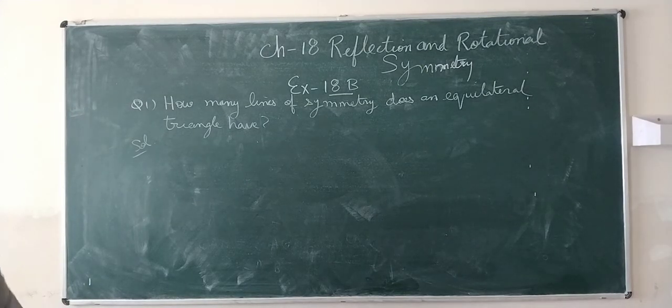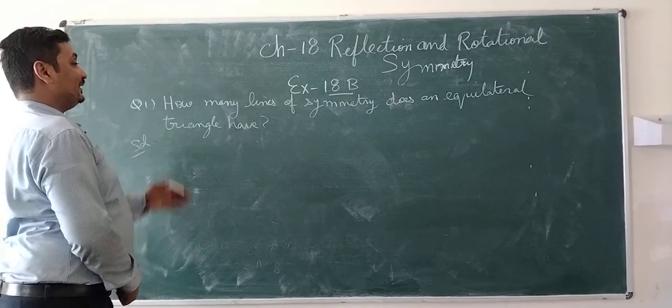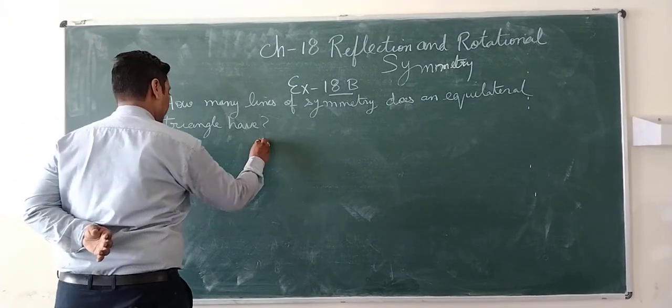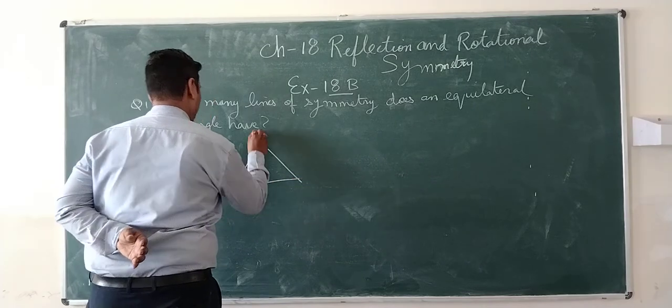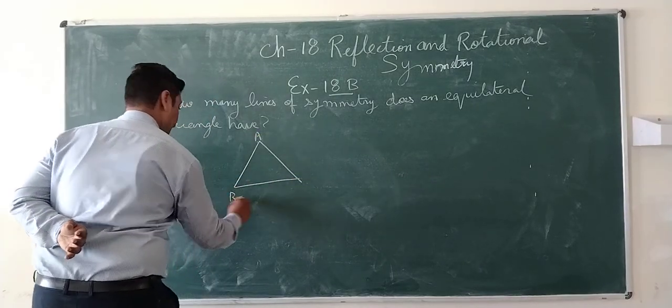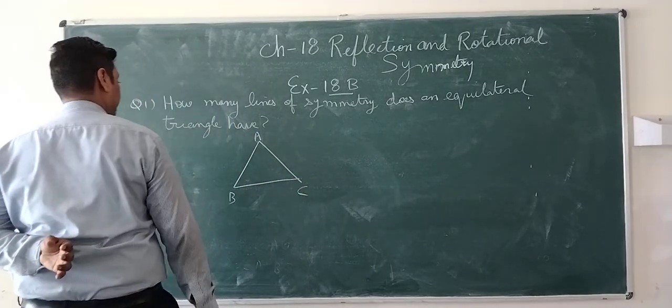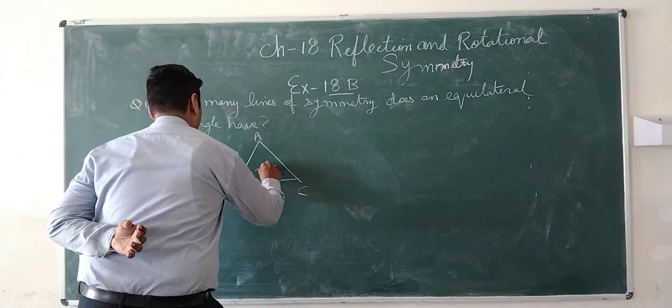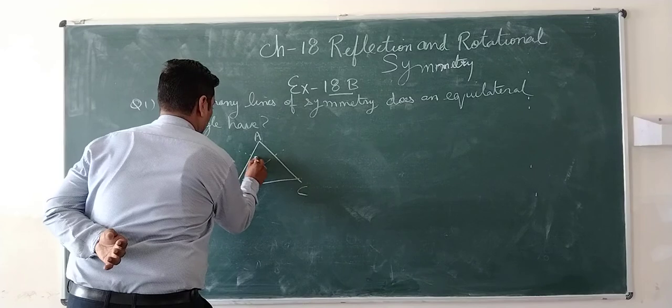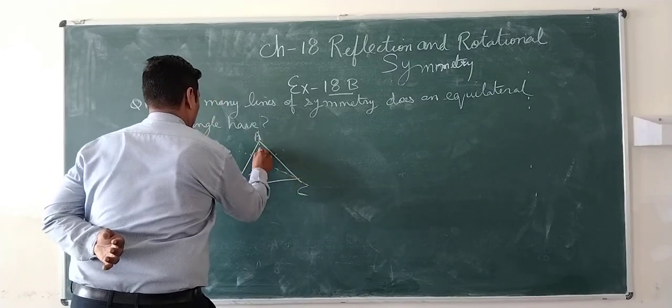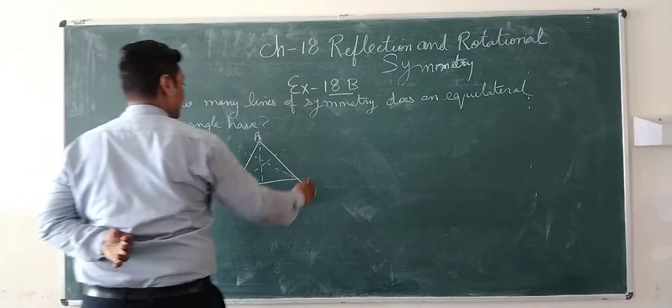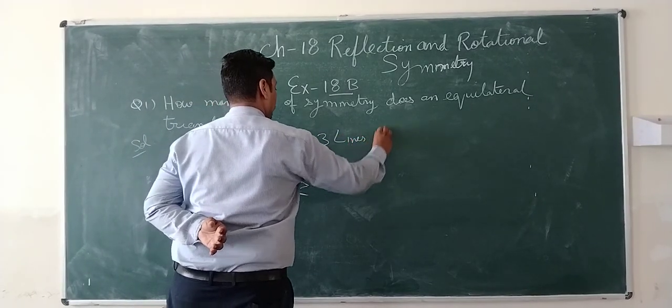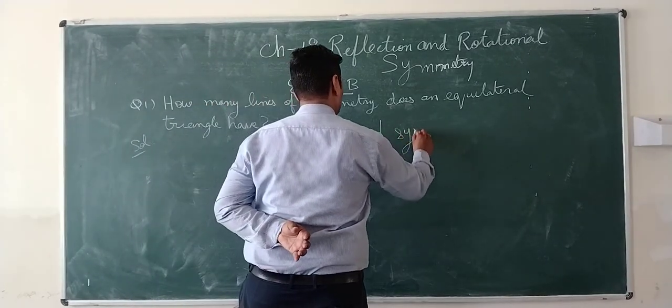Exercise 18b, question number first: How many lines of symmetry does an equilateral triangle have? Let us draw an equilateral triangle. Now we have to draw its line of symmetry. So equilateral triangle has three lines of symmetry.